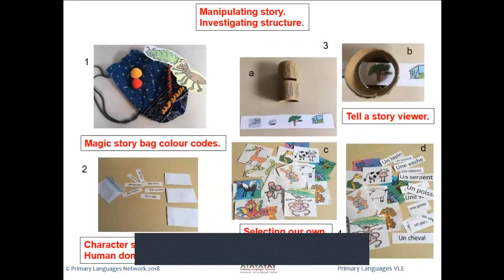For manipulation of story and investigation of structure, here are my mini beast puppets again, this time using my magic story bag. Coloured balls in the bag are linked to the colours wrapped around the pencils attached to the mini beasts. I randomly pull out a colour, the child says the colour in the target language, another child holding that puppet brings it forward, we say the noun or character's name, then recall and say the sentence it belongs to. You can also have a colour linked to a sentence in the story and create a new random order for the story.